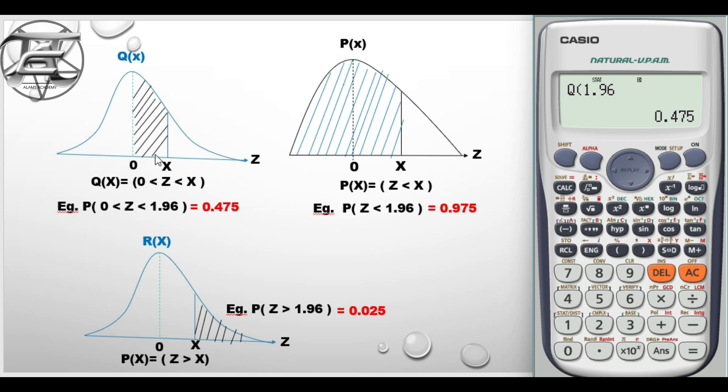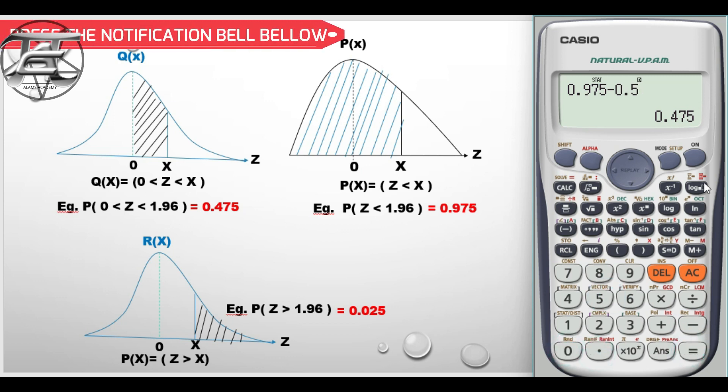So I'm going to take 0.5 from this answer that we have gotten. So if I pick 0.975 minus 0.5, you realize that we still have the same answer over there and this is the other way we can get it.